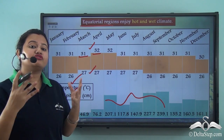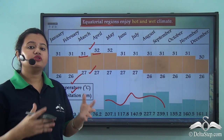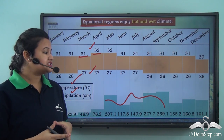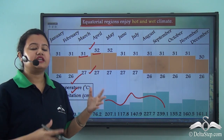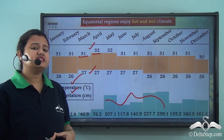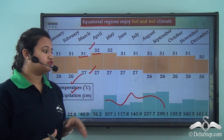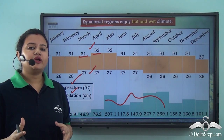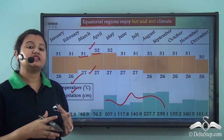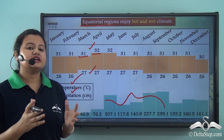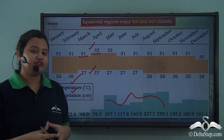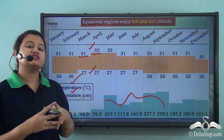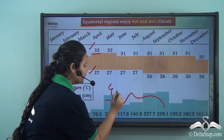The forests found in the equatorial region are known as rainforests because they grow in a region that experiences an excessive amount of rainfall throughout the year. In fact, in this region it rains almost every day at around 4 PM in the evening, and therefore the rain experienced by this place is also known as the 4 o'clock shower.